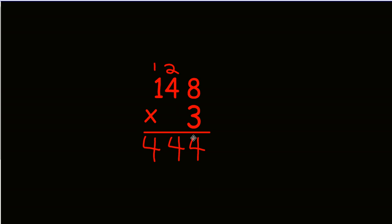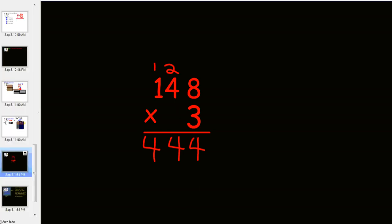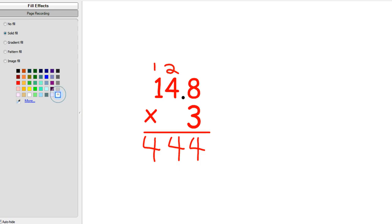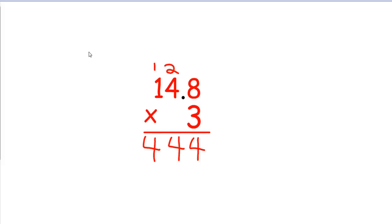Now, when I need to determine where my decimal goes, I'm going to go back to the white screen. I can see in this number, there is 1 place behind the decimal. And in this number down here, there are 0 places behind the decimal. This tells me that in my answer, I should have a total of 1 plus 0 places, which is 1. So, I'm going to take a decimal right here, and I'm going to move it 1 place to the left. 1 place over. My answer is 44 and 4 tenths.